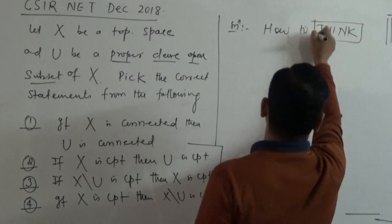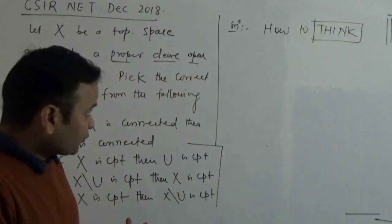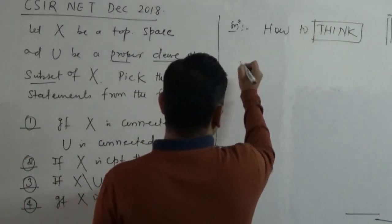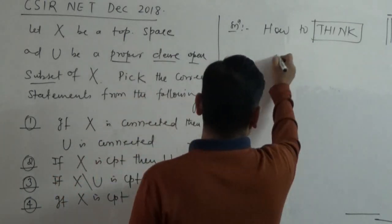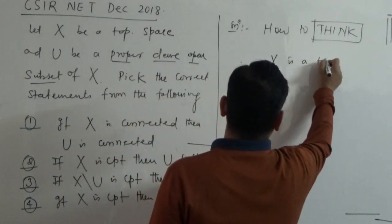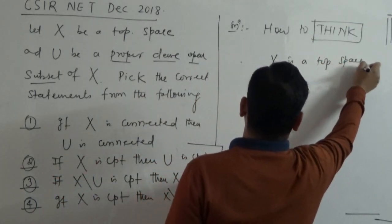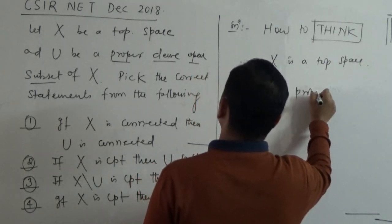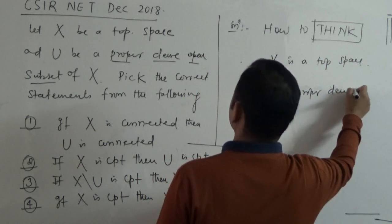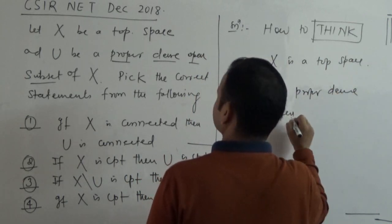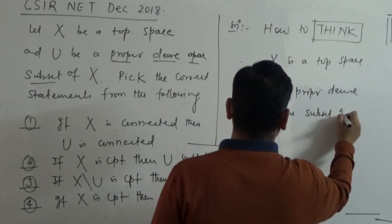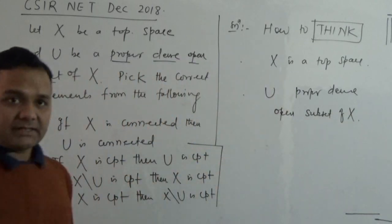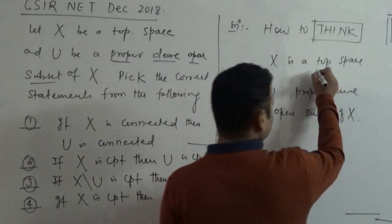So here you have given me two things. X is a topological space, and you have given me a proper dense open subset. There are two things you have given me. One is a topological space. So the first thing you have given me is a topological space.